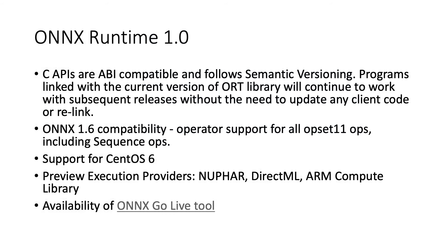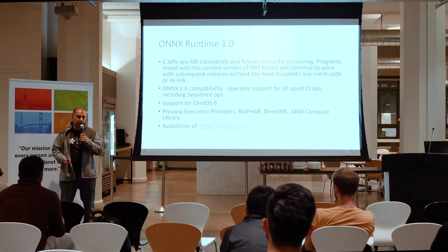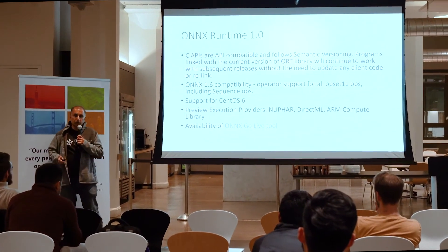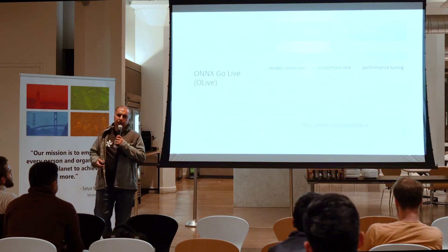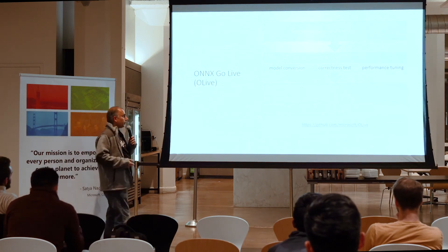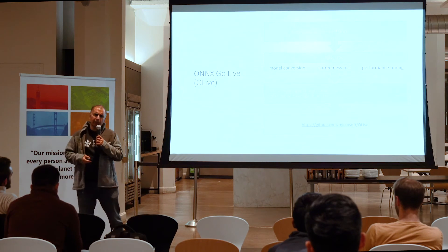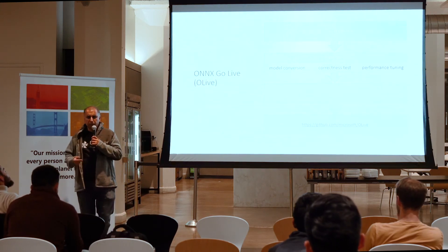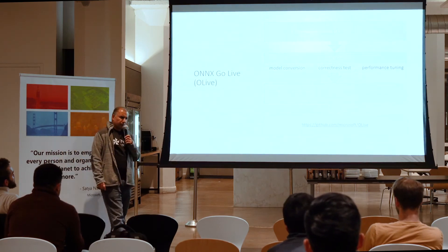We also have the Onyx Go Live tool. Many internal partners have said they have an Onyx model and know there are hardware accelerators available, but don't know how to configure it correctly. The tool integrates model conversion — you give it a TensorFlow or PyTorch model, it converts it, does validation, and if the conversion is not correct it returns an error. Most importantly, it does performance tuning — checking every single hardware accelerator on your hardware to determine whether you should run on CUDA NVIDIA GPUs, Intel OpenVINO, or just CPU. This tool is also open source on GitHub.